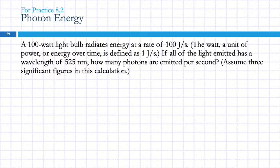A 100 watt light bulb radiates energy at a rate of 100 joules per second. The watt is a unit of power. Power is energy over time, defined as joules per second. If all the light emitted has a wavelength of 525 nanometers, how many photons are emitted per second? Assume three sig figs. So we've got 100 watt light bulb, 100 joules per second. We're going to ignore the things inside of parentheses. And we've got a wavelength of 525 nanometers. So what are we trying to find? Photons per second.